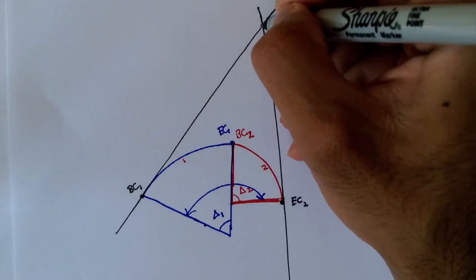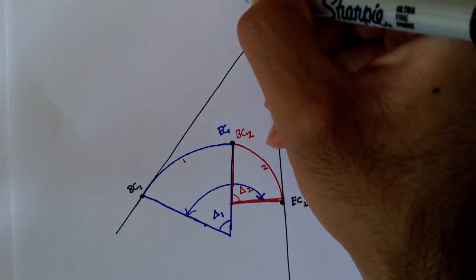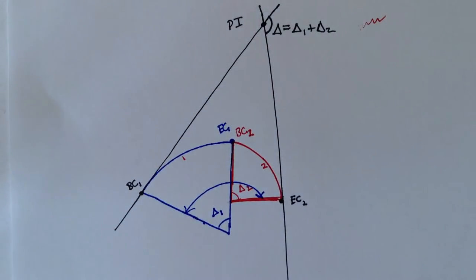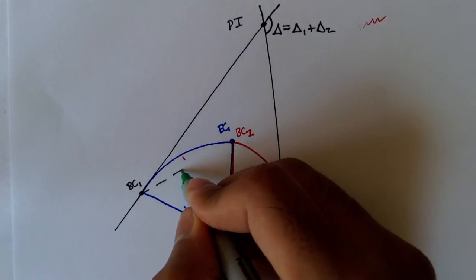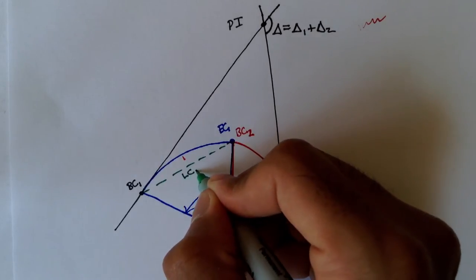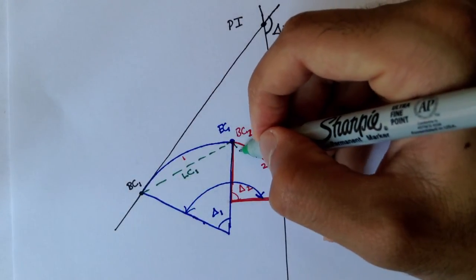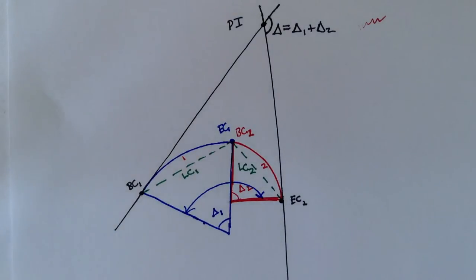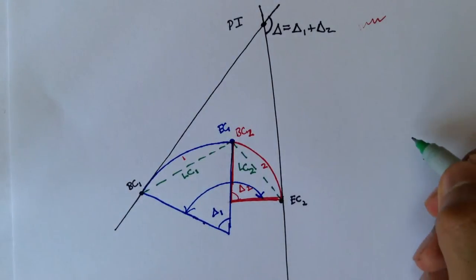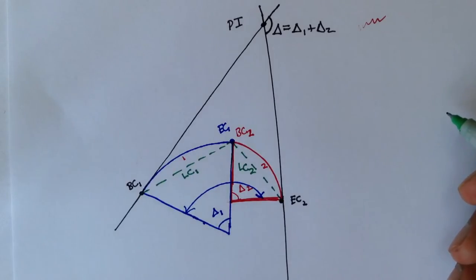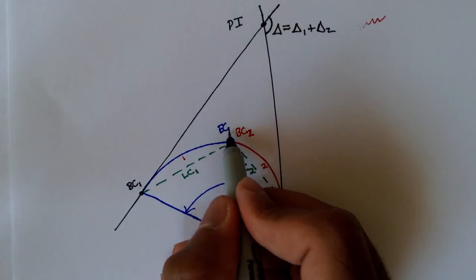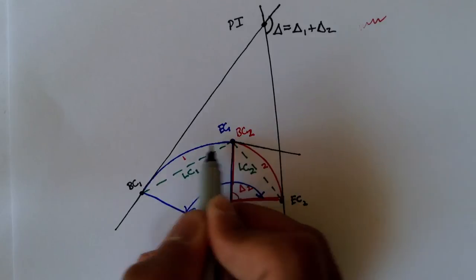Remember, this is the point of intersection for both curves. Now let's draw the long chords for both curves. From BC1 to EC1 is long chord number 1, and from BC2 to EC2 is long chord 2. When we get rid of straight segments between two horizontal curves and draw a tangent, the tangent to EC1 and BC2 looks something like this.